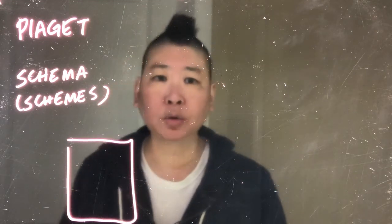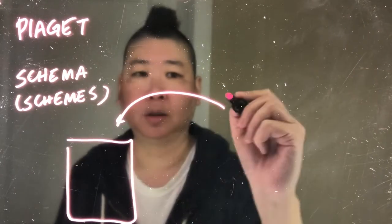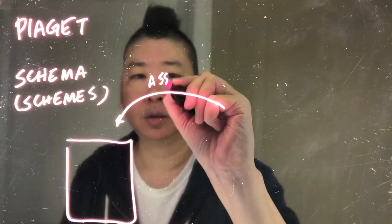So as we encounter new information, we try to take that new information and incorporate it into our existing schema or set of schemes. This is a process called assimilation.